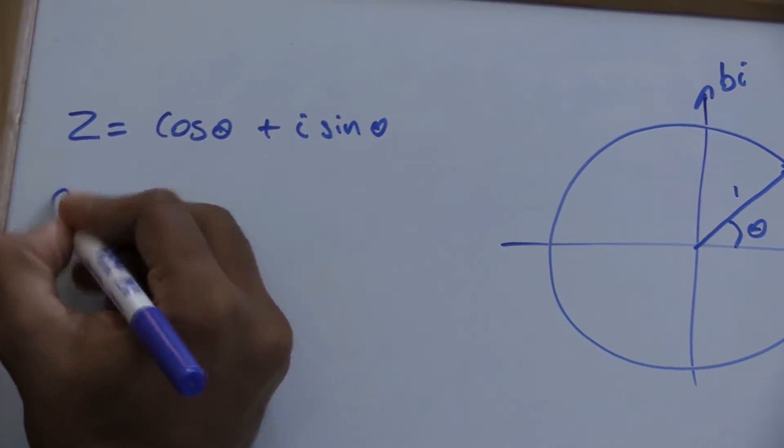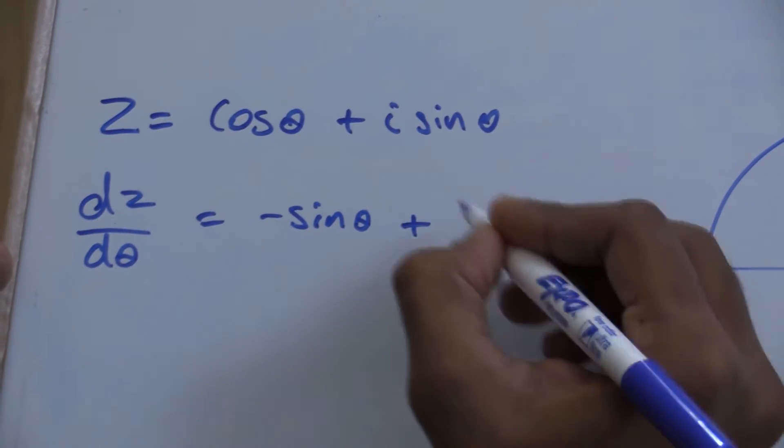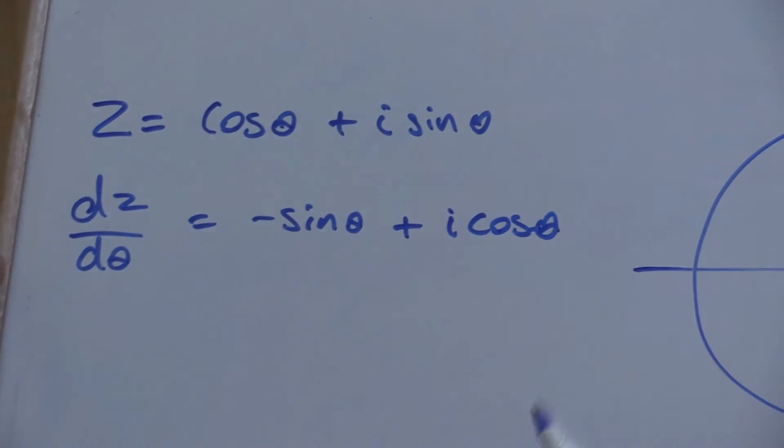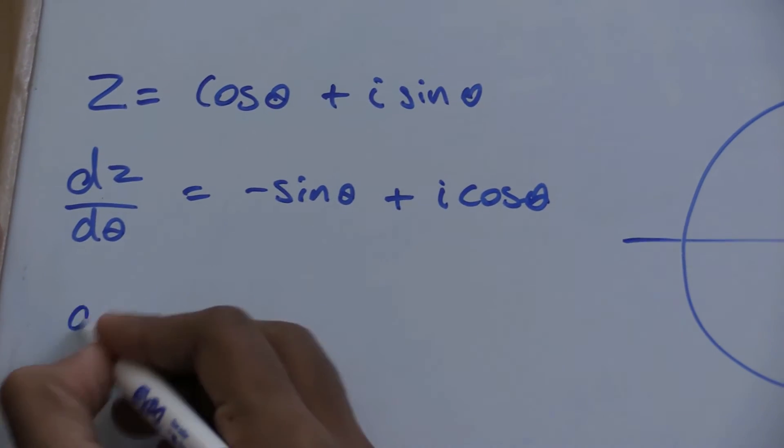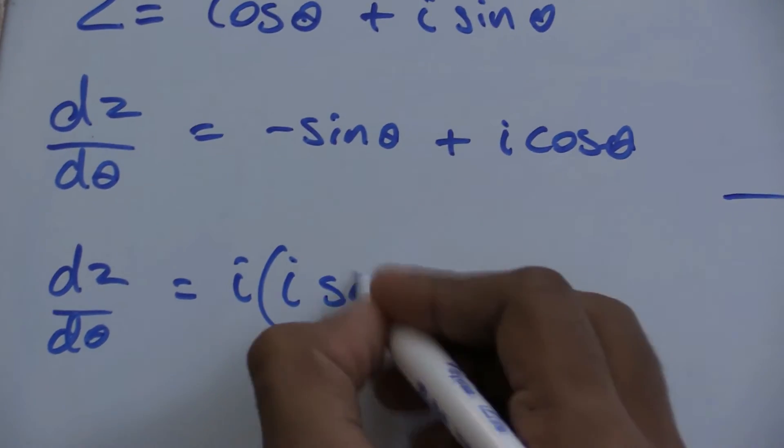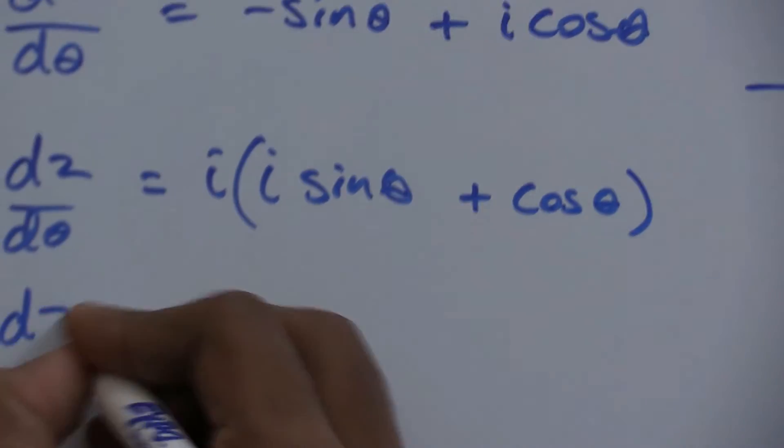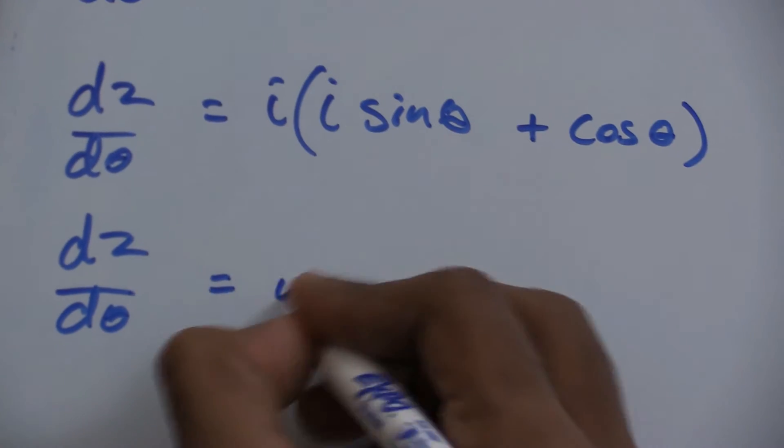Taking the derivative of both sides with respect to θ, I get negative sine of θ plus i cosine of θ. I can factor out an i from the right side and write it as i times i sine of θ plus cosine of θ, which gives dz dθ equals i times z.